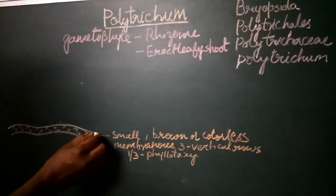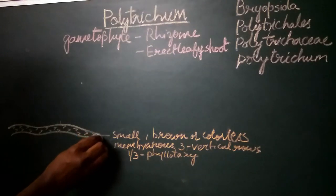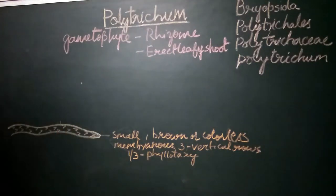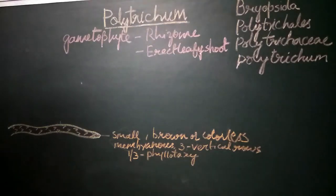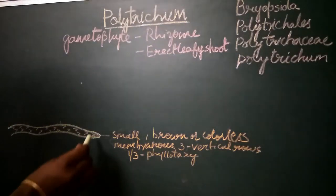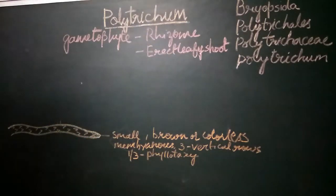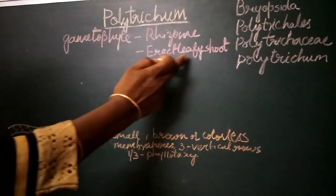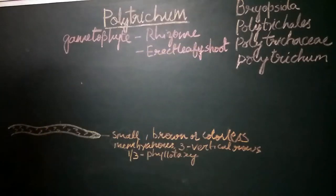The rhizome grows with the help of cells which are present in the apical region, and this helps in the horizontal growth of the rhizome. From the rhizome, the erect leafy shoot arises.